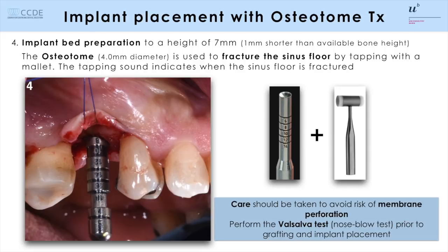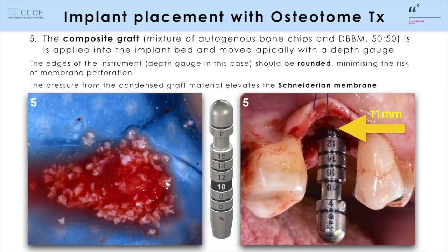The sound of the tapping indicates when the bone is fractured. We take the Valsalva test, a nose blow test, to confirm that the Schneiderian membrane is not perforated. Then the sinus elevation is performed utilizing a mixture in a 50 to 50 mode of autogenous bone chips harvested locally and DBBM, which is a bovine bone filler with a low substitution rate. The bone filler is shifted or moved apically with a depth gauge with rounded edges to minimize the risk of perforating the Schneiderian membrane.